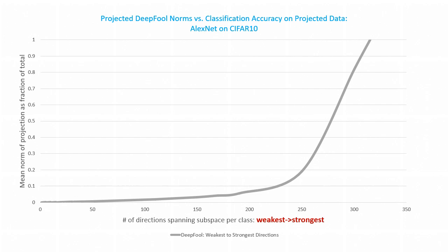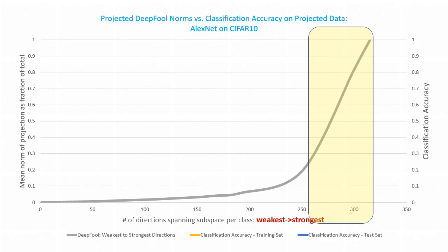We can see from the graph that they lie almost entirely in a small subspace of high-strength directions — not surprising, since these were our most adversarial directions. So to defend against attack, why not throw these directions away? Well, there's a big problem with that. Let's plot the net's classification accuracy when the input data is confined to exactly the same subspaces.